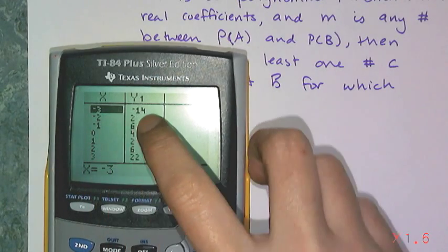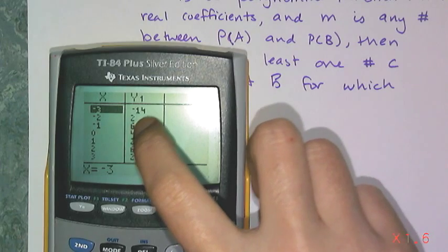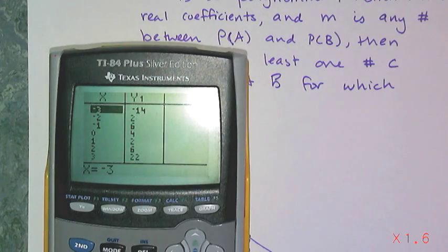then at negative 3 the y value is negative. So it's that Intermediate Value Theorem that's telling me in between those two positive and negative numbers is the zero that I'm looking for.